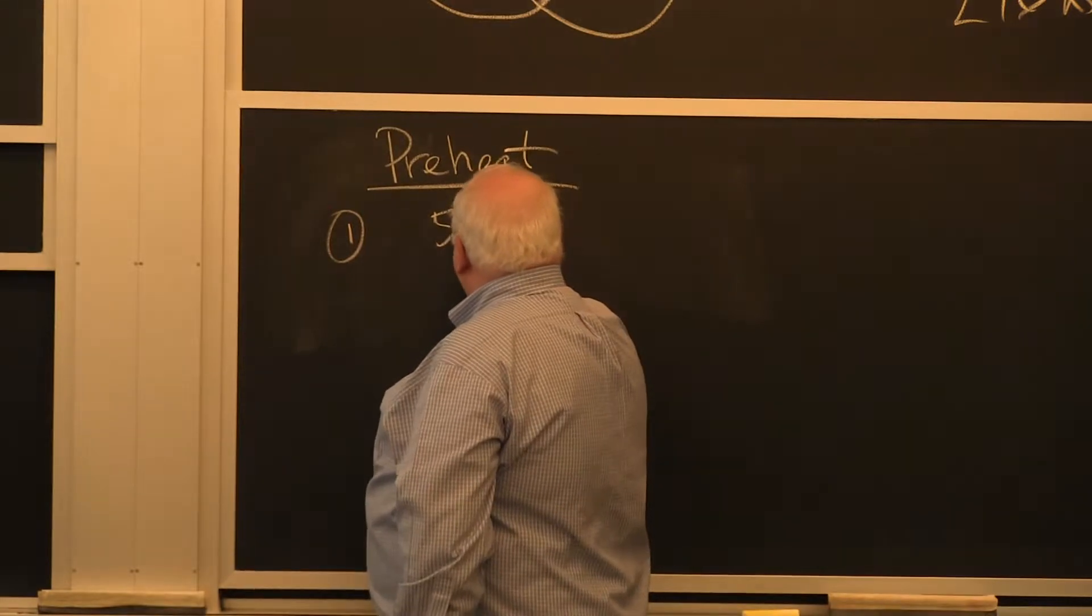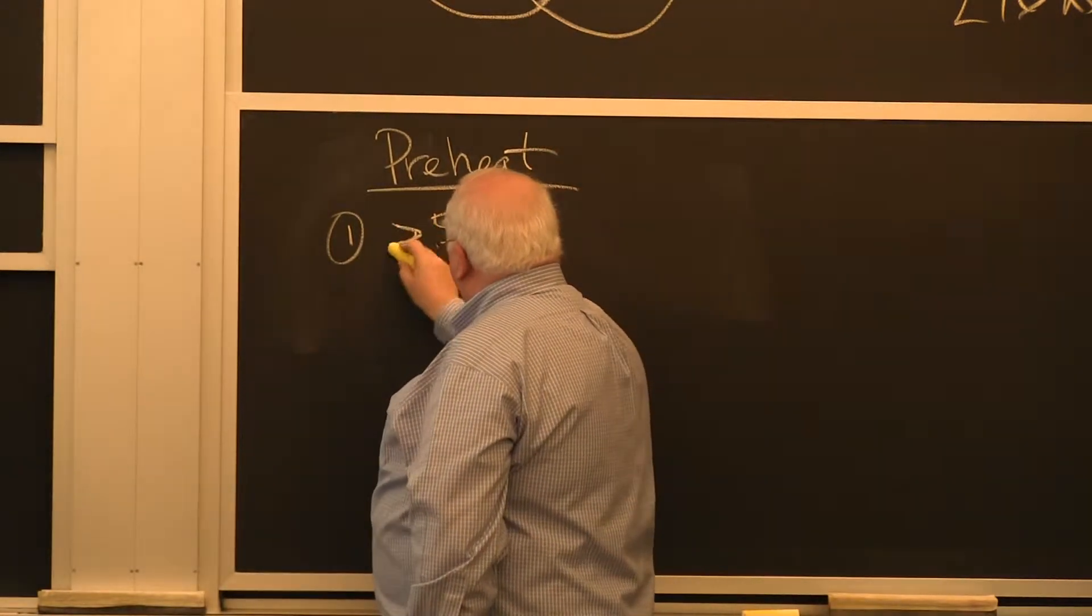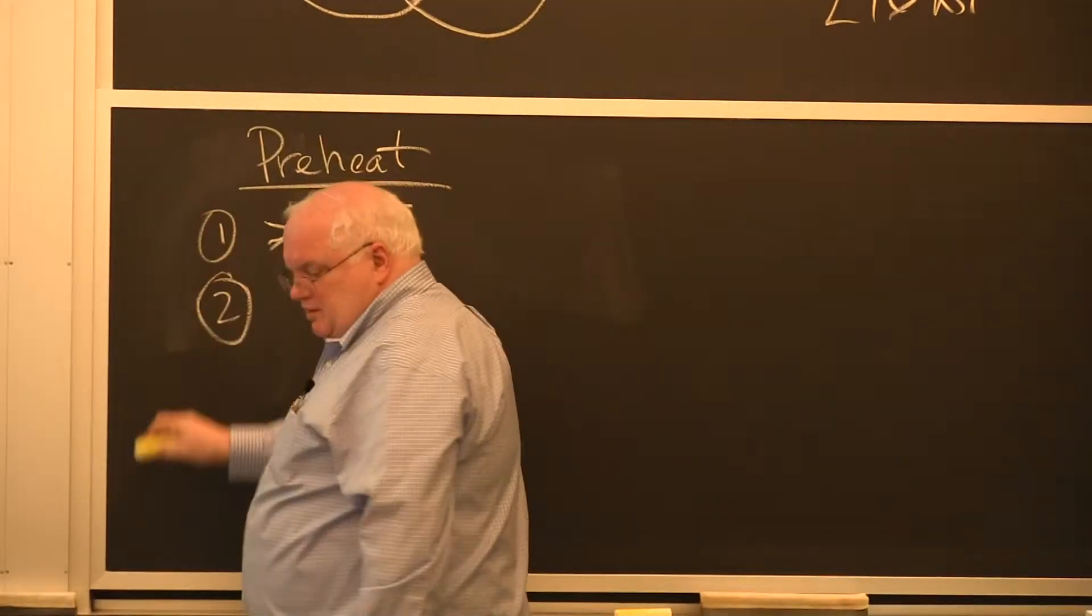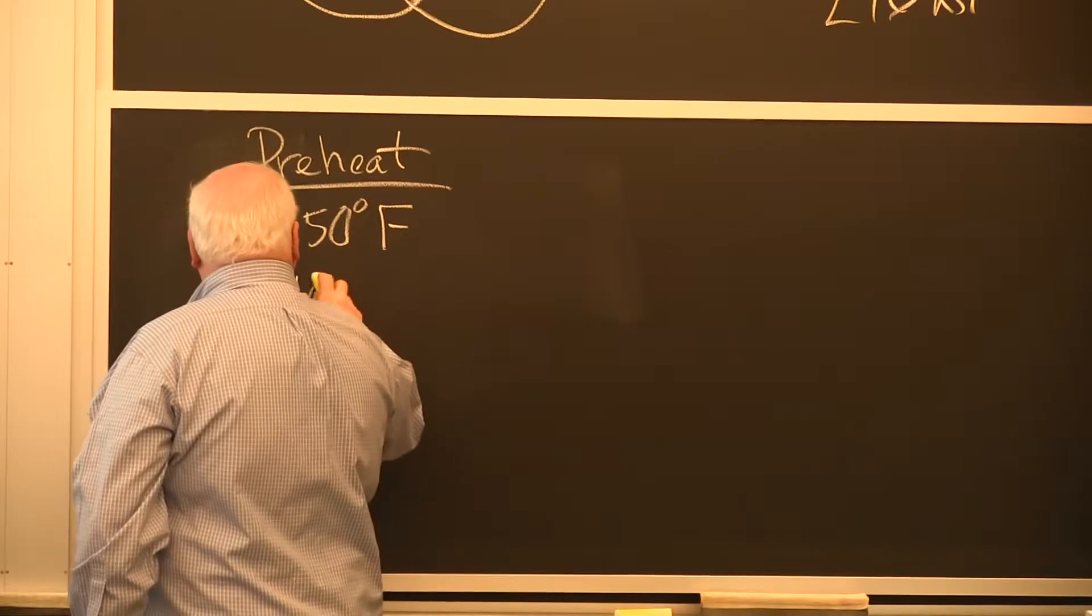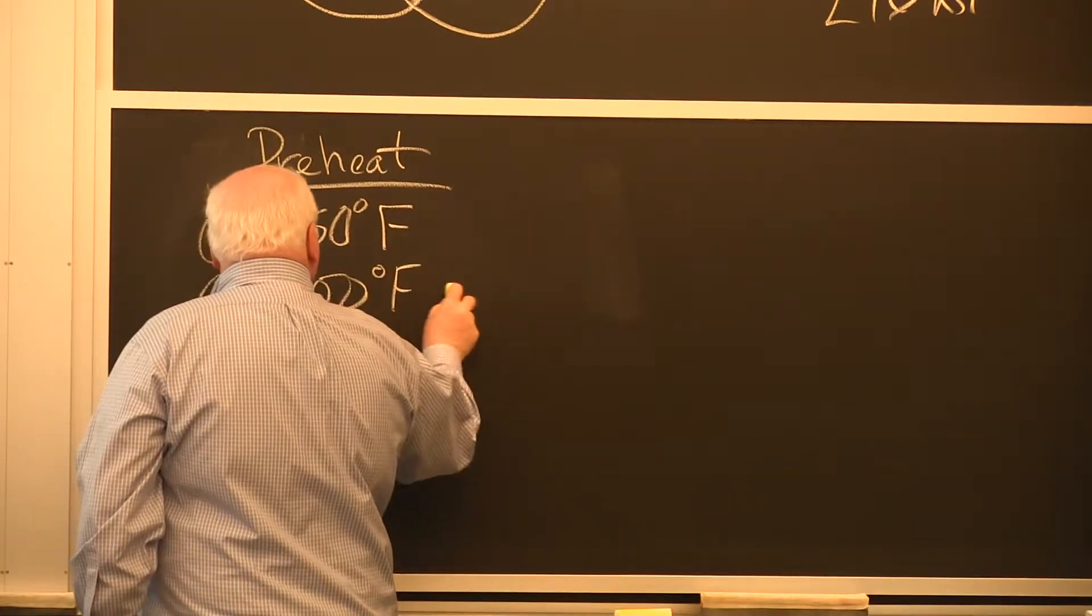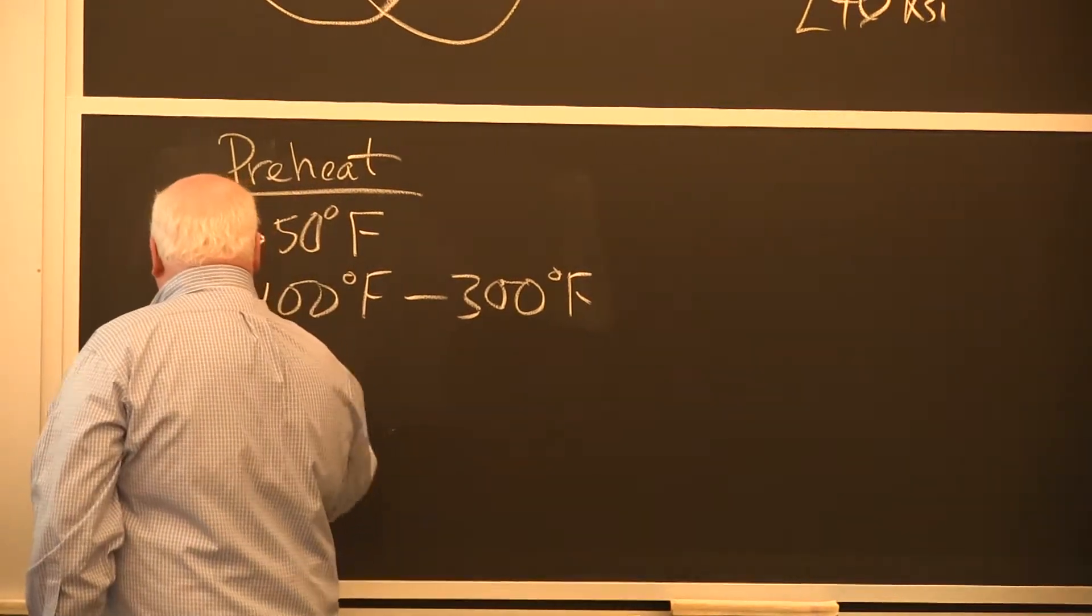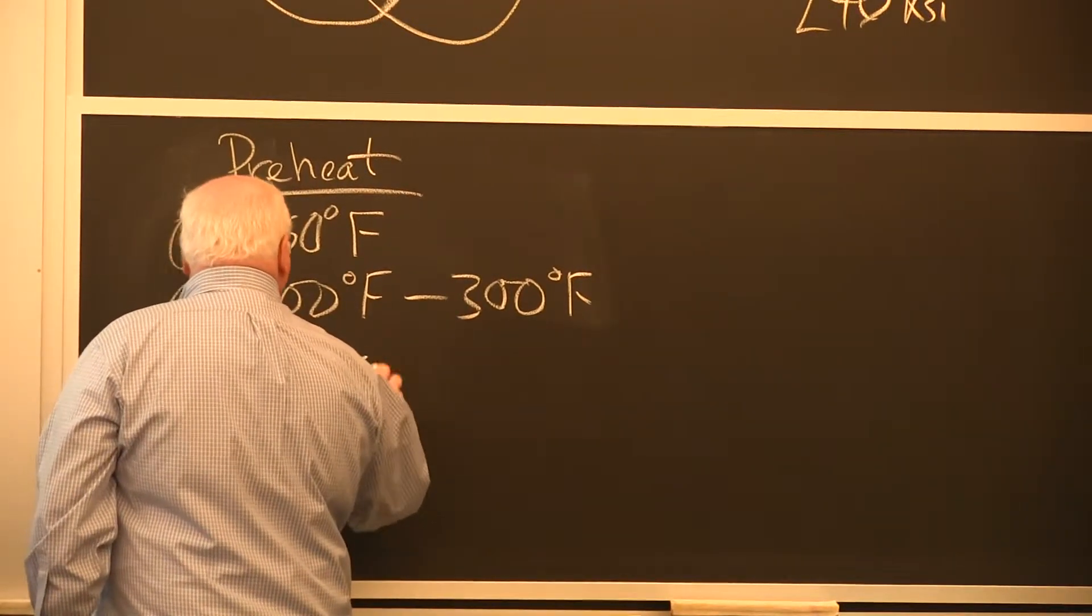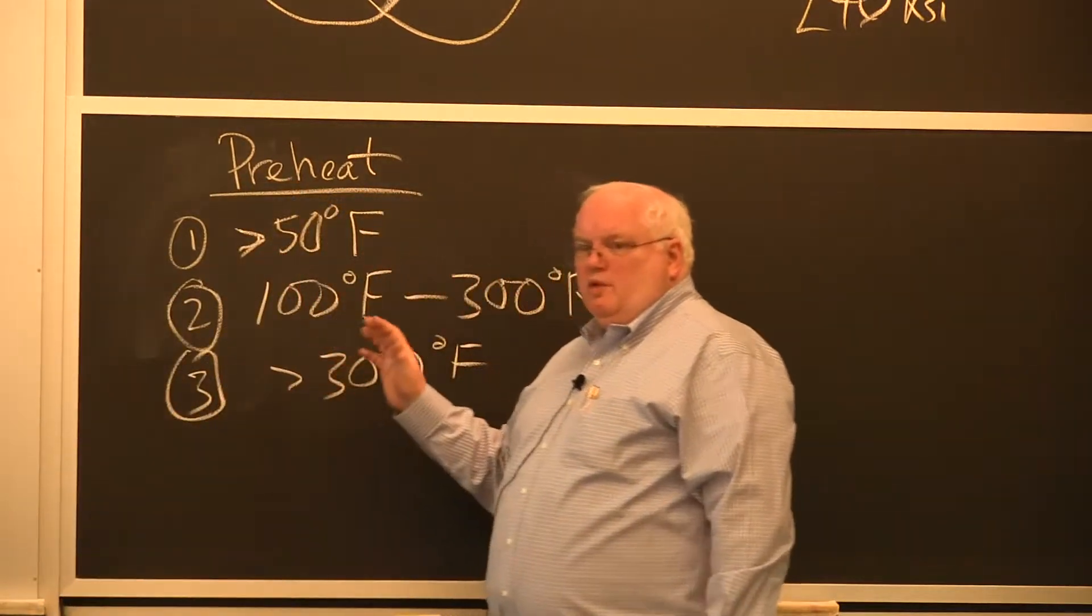One is 50 degree, must be greater than 50 degrees Fahrenheit. One is you heat the steel from, let's say, 100 degrees Fahrenheit to 300 degrees Fahrenheit. And the third level is greater than 300 degrees Fahrenheit. Well, what are we doing with each one of these?